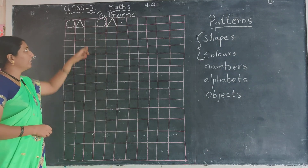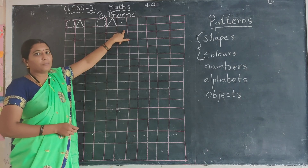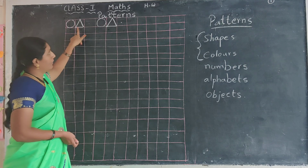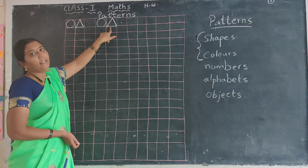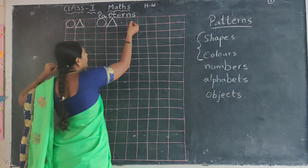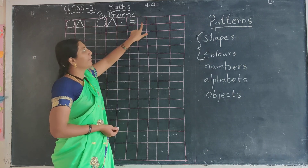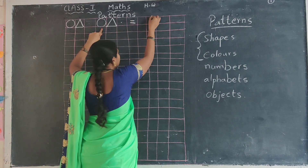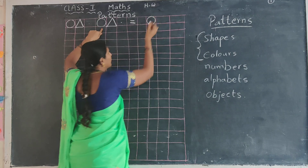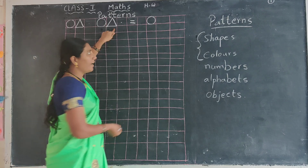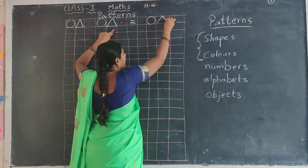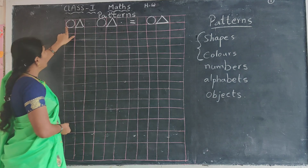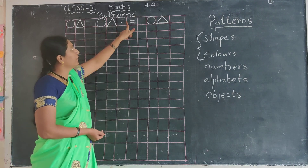In the last class I already explained repeat patterns. This pattern has: first circle, circle, triangle — so again circle, triangle. If you want to make another pattern, you have to start with circle, circle, triangle again. You have to make only one pattern — circle, triangle, circle, triangle — that is the pattern.